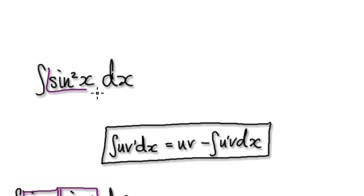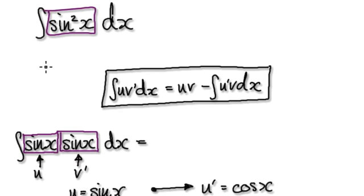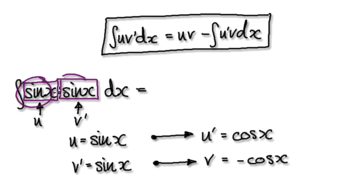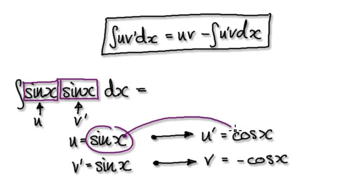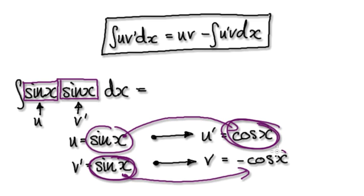Okay, so to do this, visualize this thing here as this. So set u as this and set v prime as also this. So if u equals sine of x, then u prime, you differentiate it to give you this. And then if v prime equals sine of x, then you would integrate it to give you the normal v.